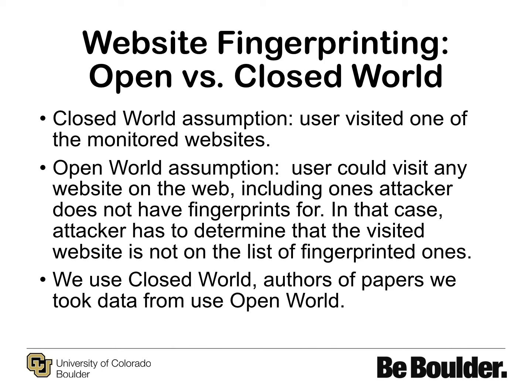In our threat model, it is assumed that an attacker could monitor a limited number of websites to get their fingerprints. There are two models for fingerprinting. In the closed world model, we assume that the user visited one of the monitored websites. In the open world model, we assume that the user could visit any website on the web, including ones the attacker does not have fingerprints for — in that case, the attacker should be able to correctly determine that the visited website is not on the list. We used the closed world model for now and leave the open world for future work.